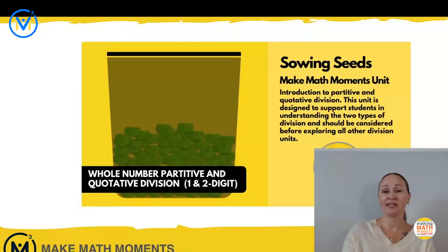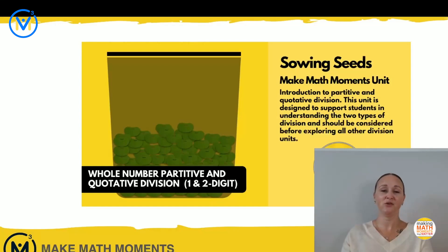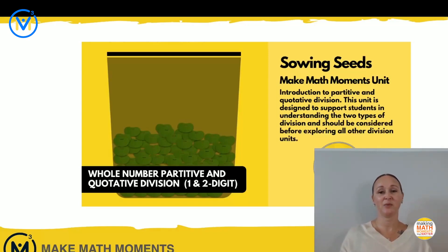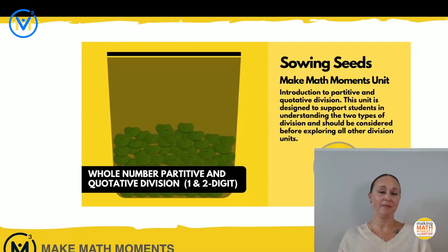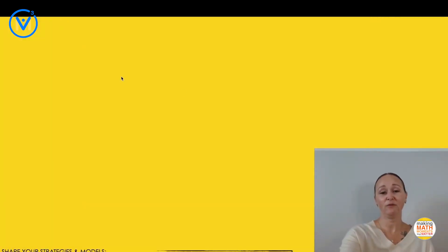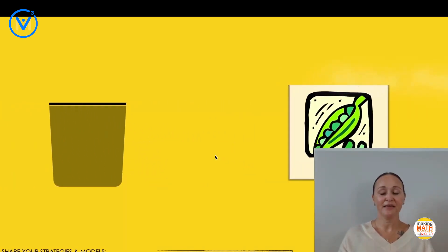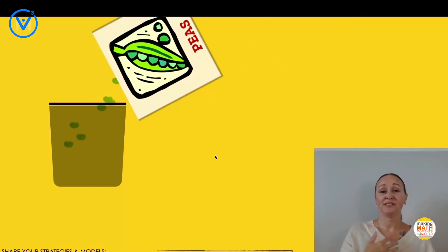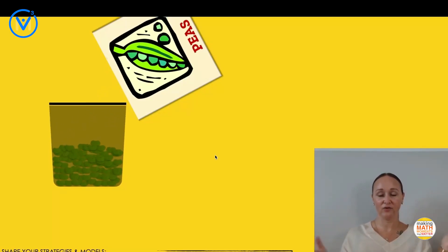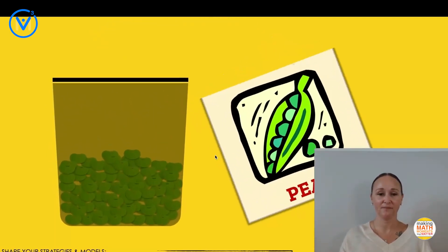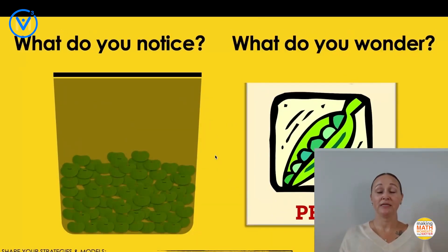So I'm going to start with a context for you. If you have access to a pen or pencil and paper, I would encourage you to actually draw this out and create a visual representation. The context comes from a Make Math Moments unit called Sowing Seeds, day one. When I wrote this unit, I was in the middle of prepping my garden in the spring, so planting was on my mind. I dumped out a pack of peas and noticed there were 78 peas altogether.